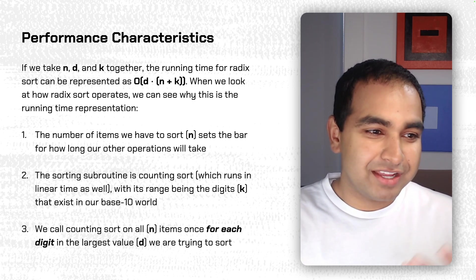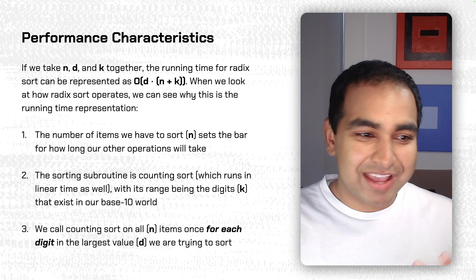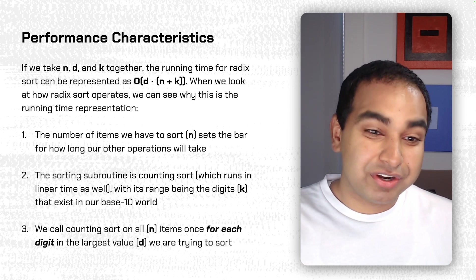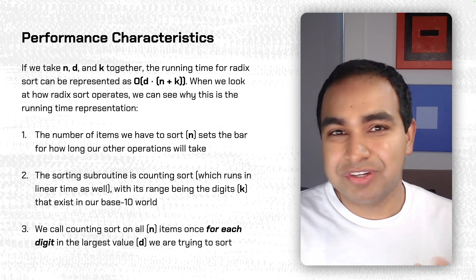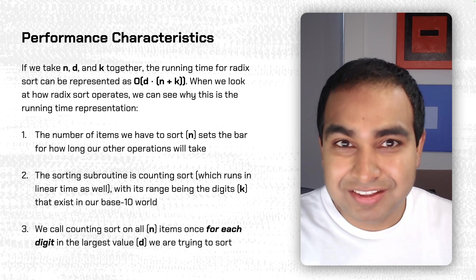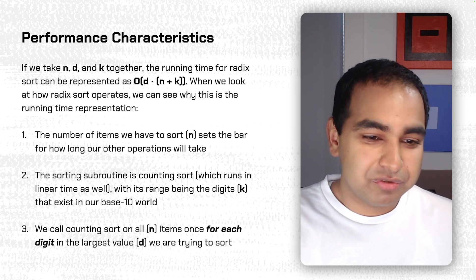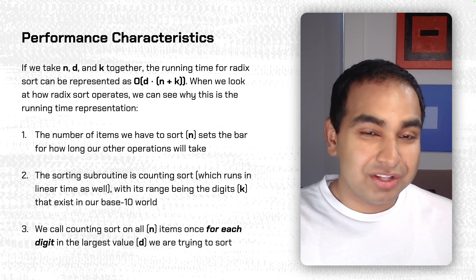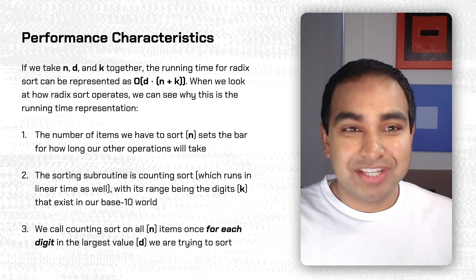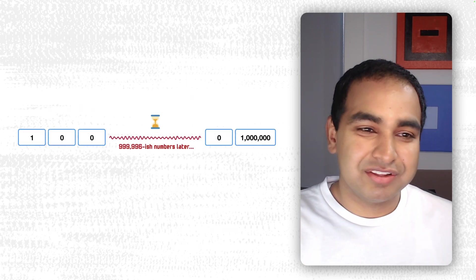And the reason it's quite nice is that the number of items you have to sort is N. It's the bar for how long other operations will take. The sorting subroutine is counting sort, which runs in linear time as well, optimized linear time, which is a range of digits that exist in our base 10 world. We call counting sort on all N items, once for each digit, which is D, which we're trying to sort, which is quite nice.